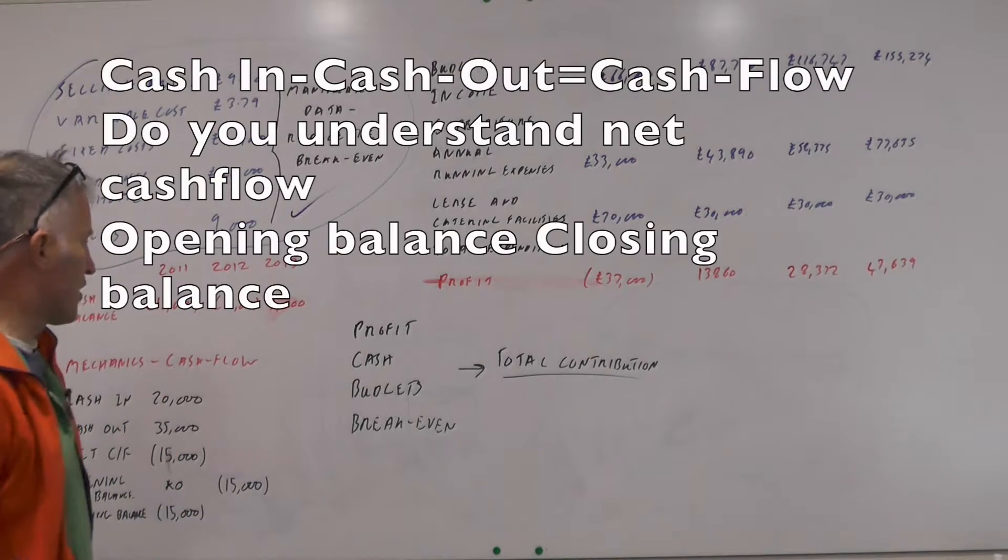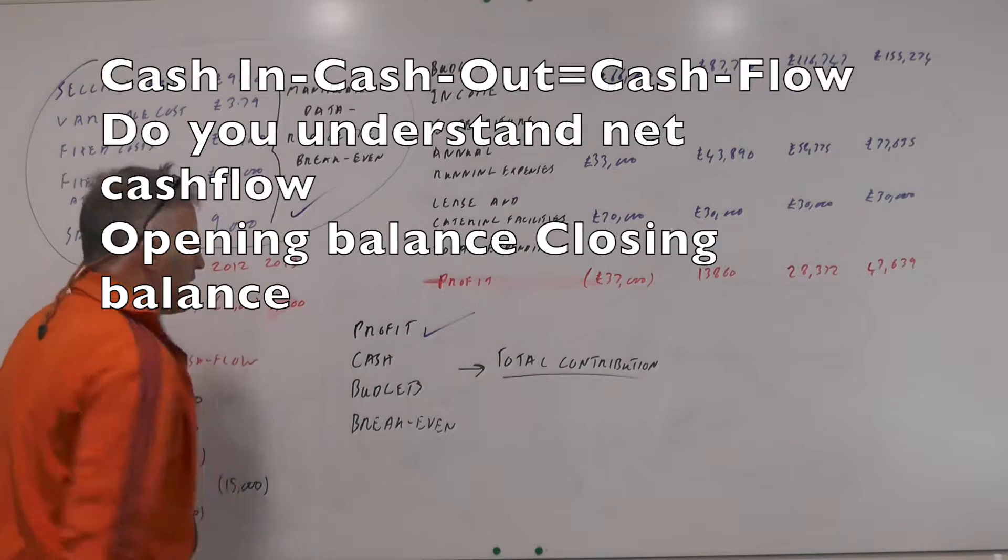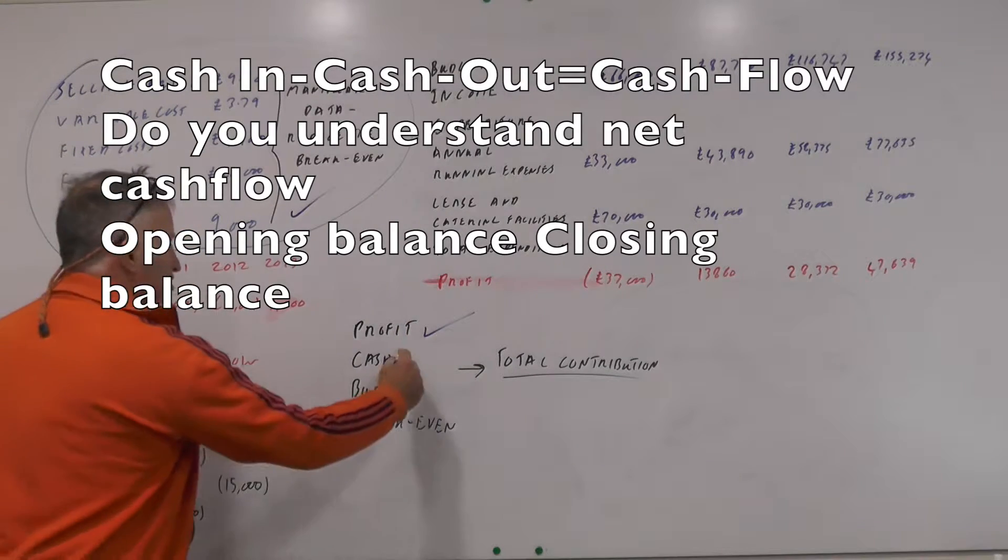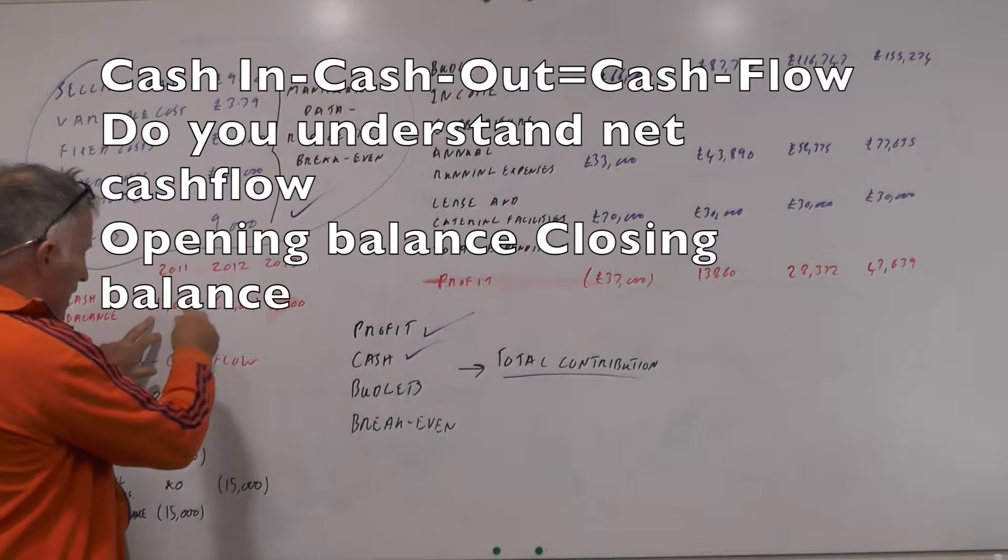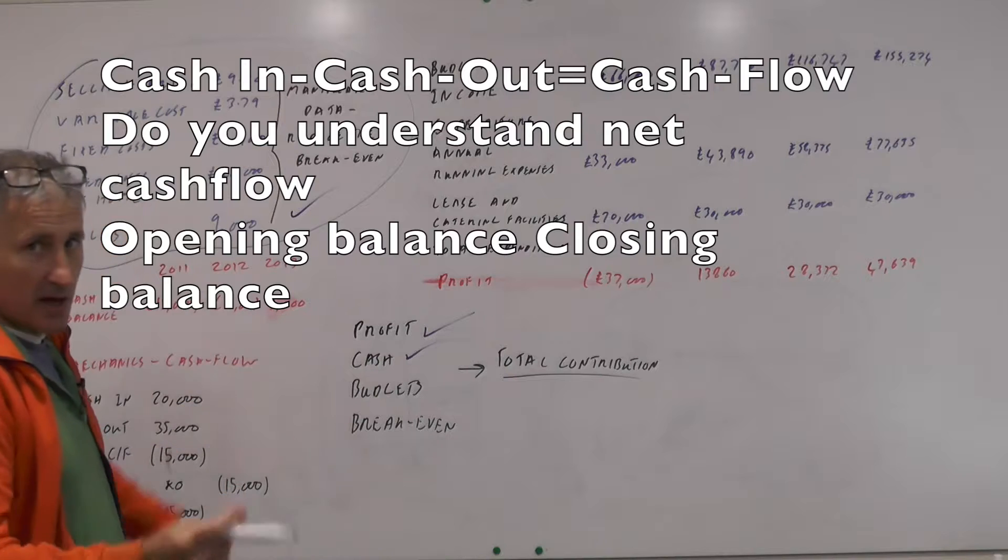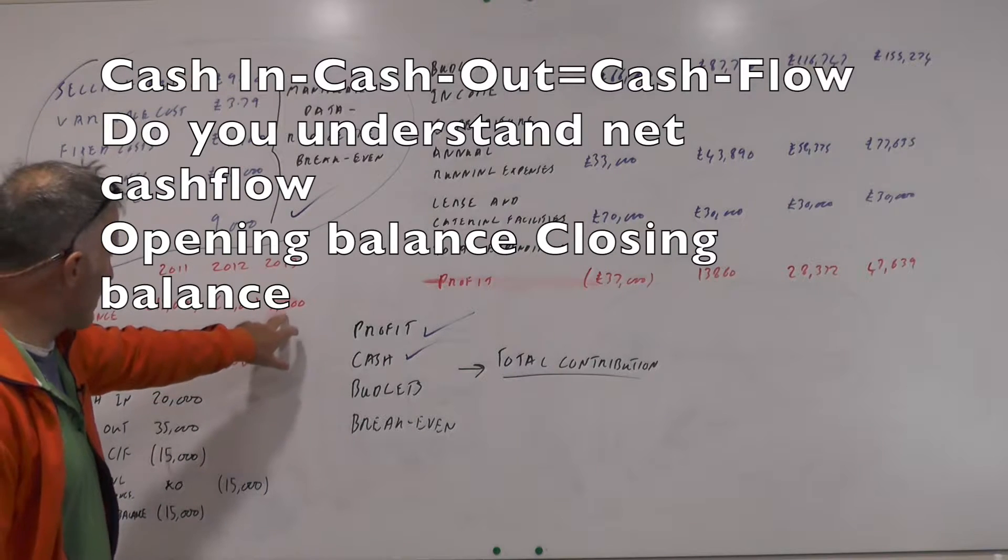We've also got cash flow so we've done profits. Cash flow is they may just give you the numbers on the page. So here they got brackets 50,000, 12,000 and then we move to a 3,000 pound surplus here.